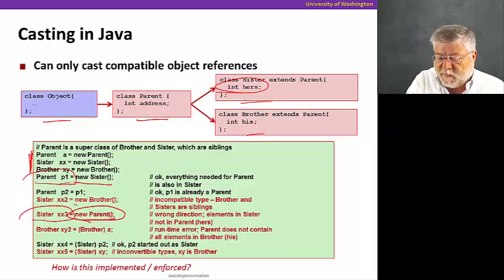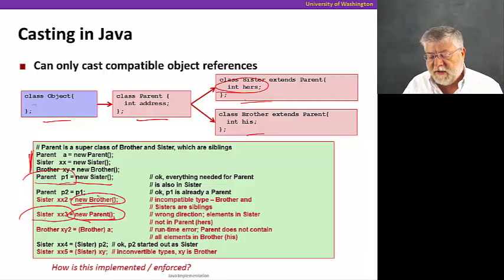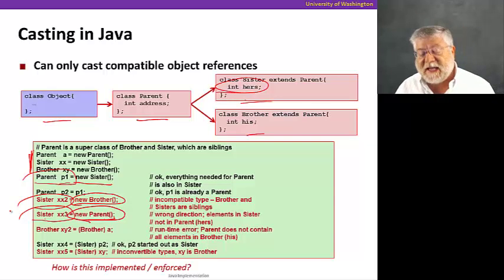Let's take a look at another example just above this one. If we create a new object called brother, try to cast that as a sister, that doesn't work either. And the reason in this case is that brother also has a different variable called his that we don't know where to put if we move it to the type sister. So not only is it missing hers, but it has this other thing, his, that sister doesn't know what to do with.